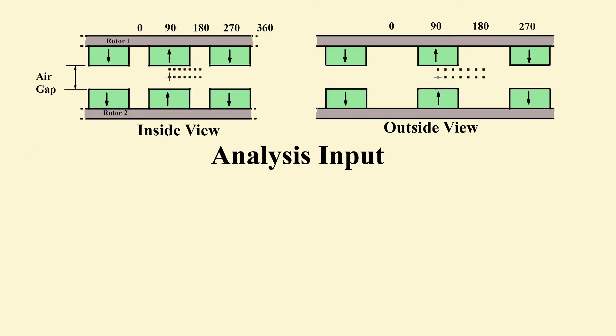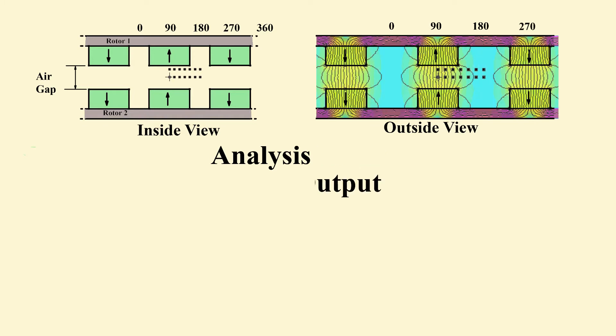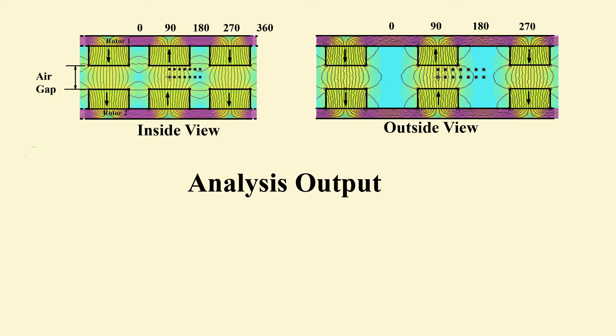Scale drawings plus air, magnet and iron properties are entered into the program. Points are set in the air gap at 15 degree intervals over 90 degrees. Just press the button and the flux density is mapped. Numeric values can be read off at the set points.